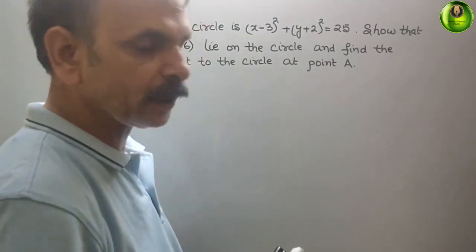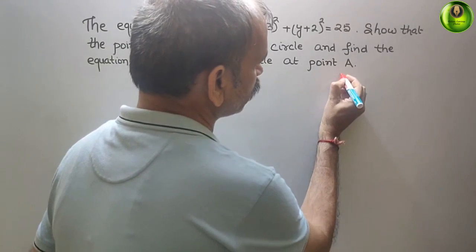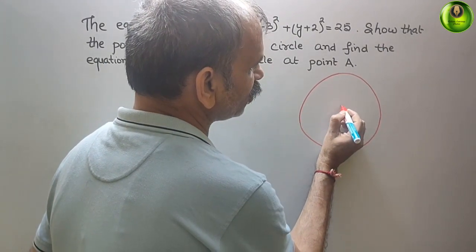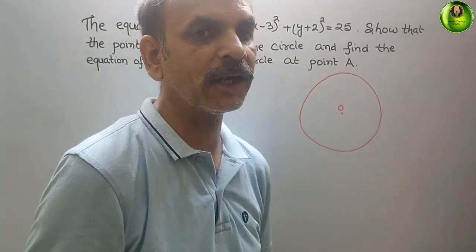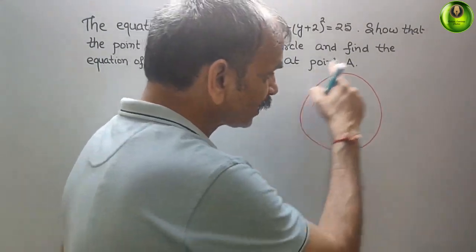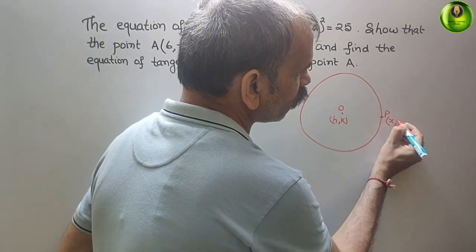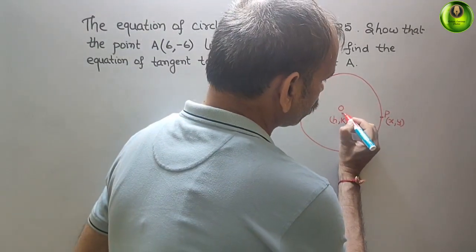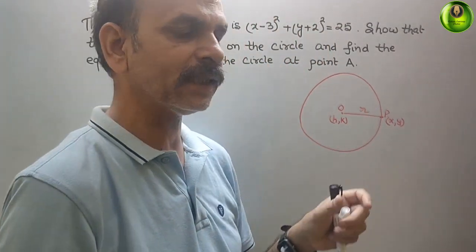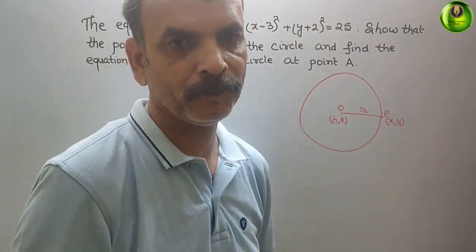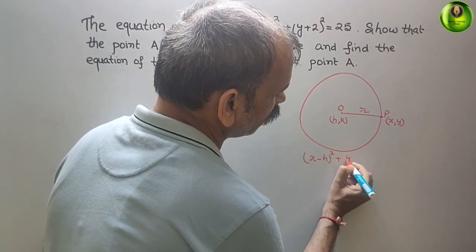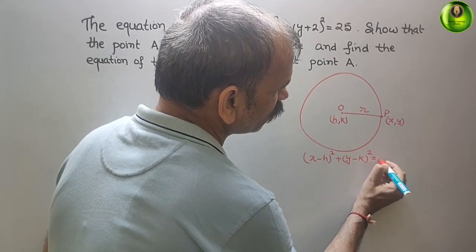To understand this: there is a circle, and this is the center, which we take as coordinates (h, k). The point on the circle is P, with coordinates (x, y). If you join O to P, that is your radius. So the equation of a circle is nothing but the distance formula between O and P, squared: (x-h)² + (y-k)² = R².